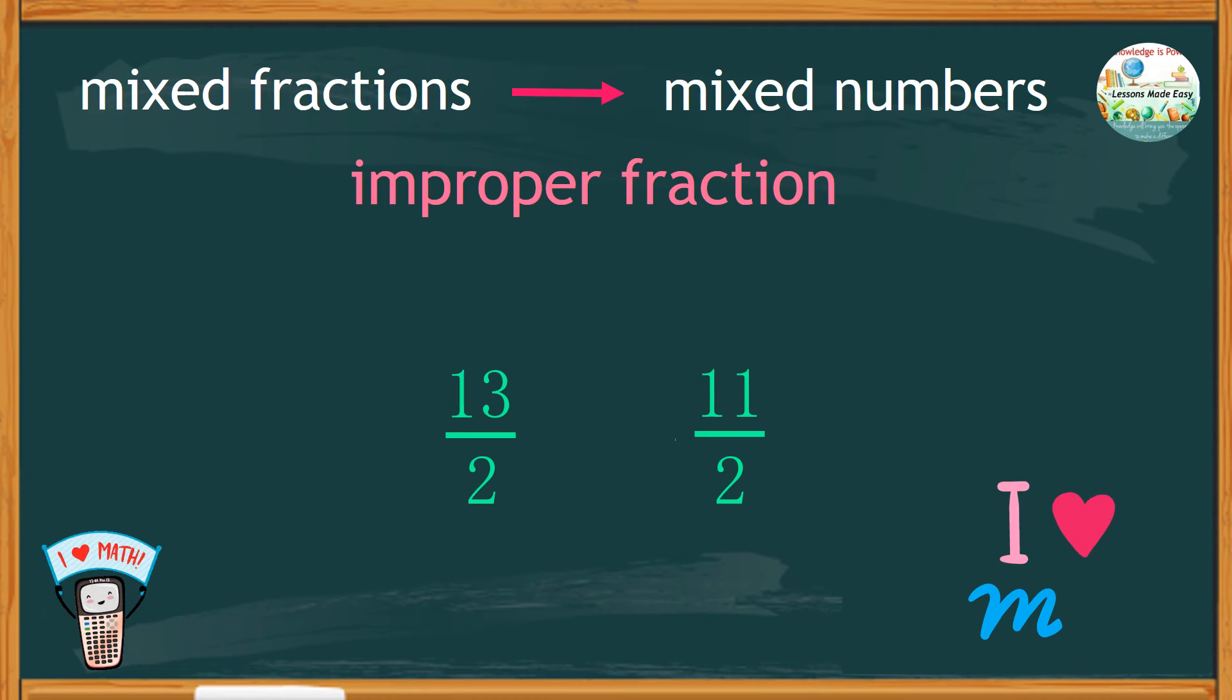and keep the same denominator of 2. Then, do the cross-multiplication. 13 times 2 would give us a product of 26,